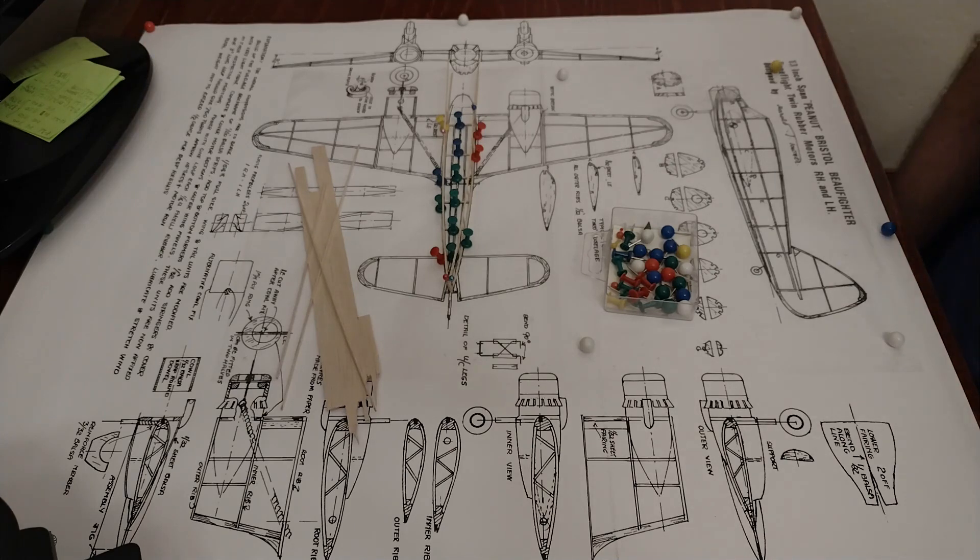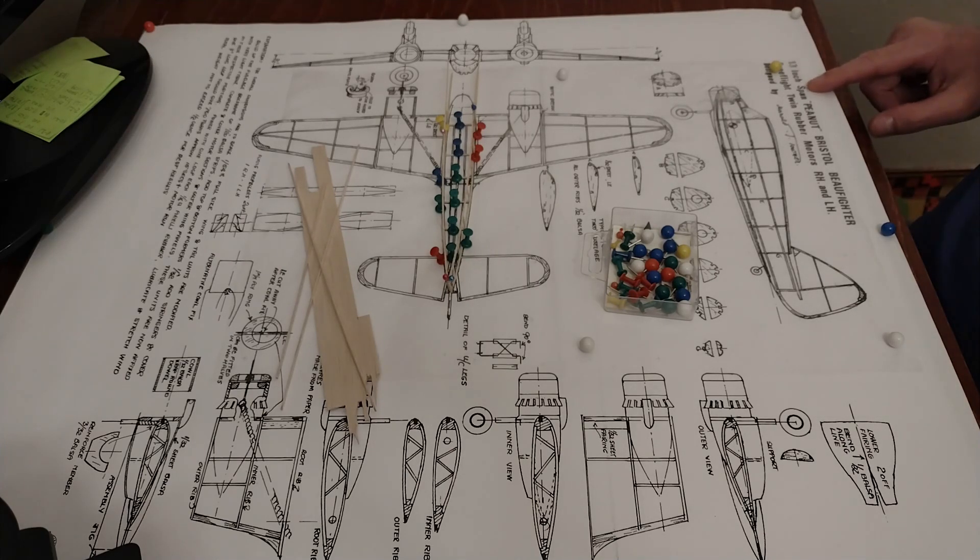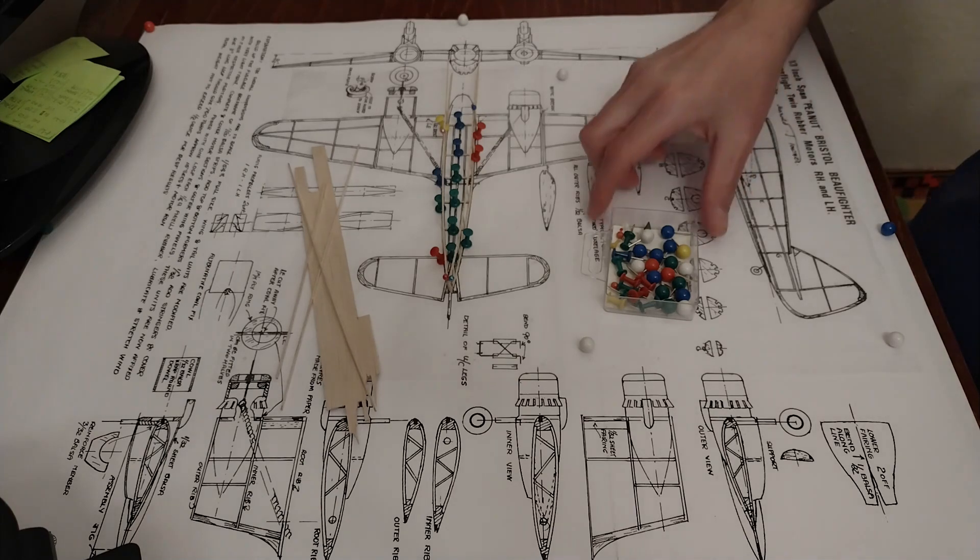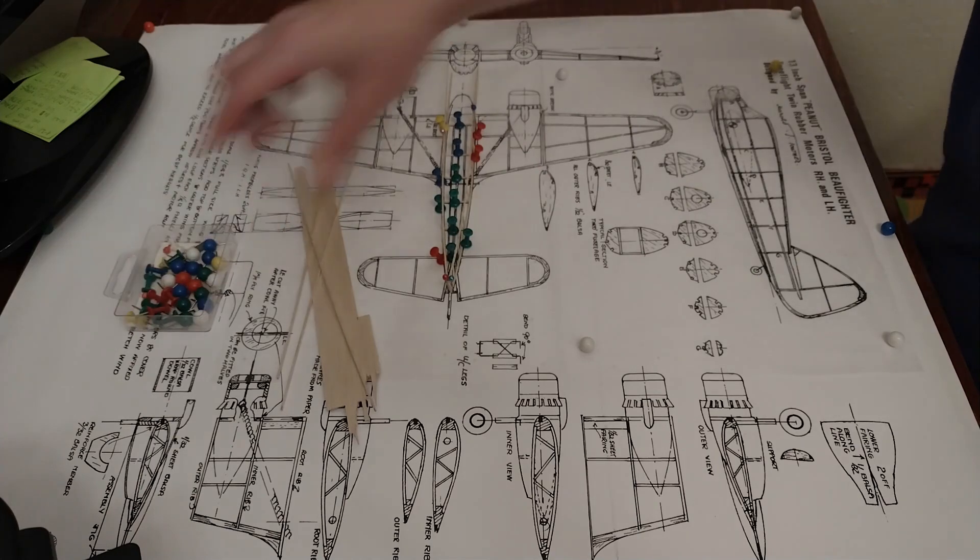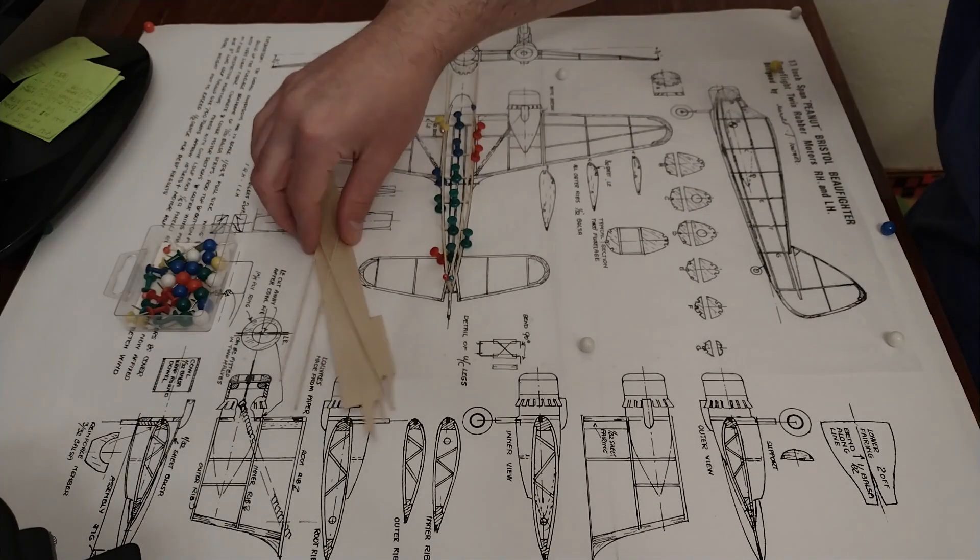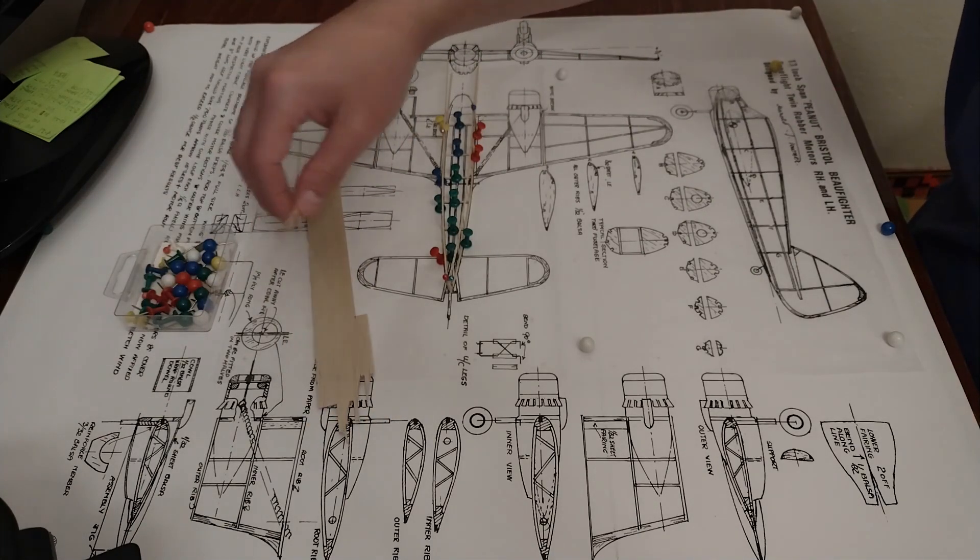Hello everybody and welcome back to the channel and to this build of the 13-inch span Peanut Bristol Bow Fighter, rubber powered. Not that it'll ever fly, but it's kind of an in-between project, a mini project, but not because it's mini, it's easy actually.